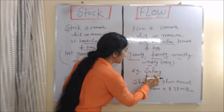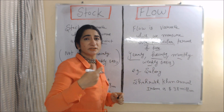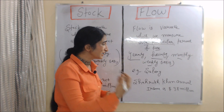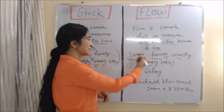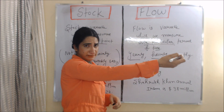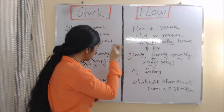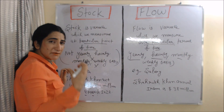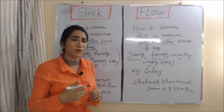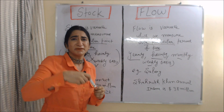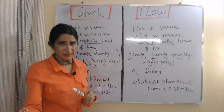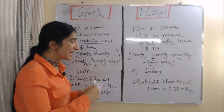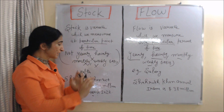For example, your salary is a flow variable, because if someone asks you about your salary, you either tell your salary on a yearly basis or monthly basis. On the other hand, wealth is a stock concept, because if someone asks you about your wealth, you don't say 'my monthly wealth is this' or 'my yearly wealth is this' — you just tell about your wealth or net worth at a particular point of time.